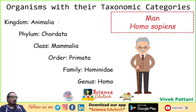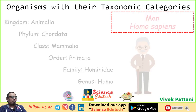Homo sapiens — man. Kingdom: Animalia. Phylum: Chordata. Class: Mammalia. Order: Primata. Family: Hominidae. Genus: Homo. Species: sapiens.